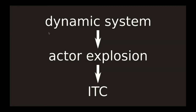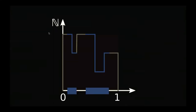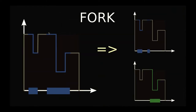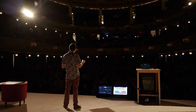Interval Tree Clocks is a mechanism designed to fight this. The idea is instead of attributing a unique identifier to every node in the system, we take the real value interval from 0 to 1 and we attribute part of it — not necessarily contiguous, as you can see — to a device. And when we want to add a new device into the system, we start from an existing device and we fork it, so we take part of its interval and we give it to the new device.